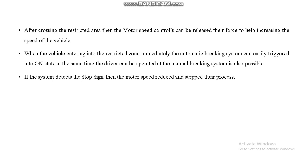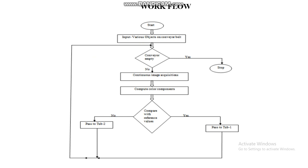The workflow of our proposed system begins with various objects placed on the conveyor belt. The system checks whether the conveyor is empty or an object is present. If an object is present, image acquisition takes place, color components are extracted, compared with reference values, and then the object is segregated to its destination.